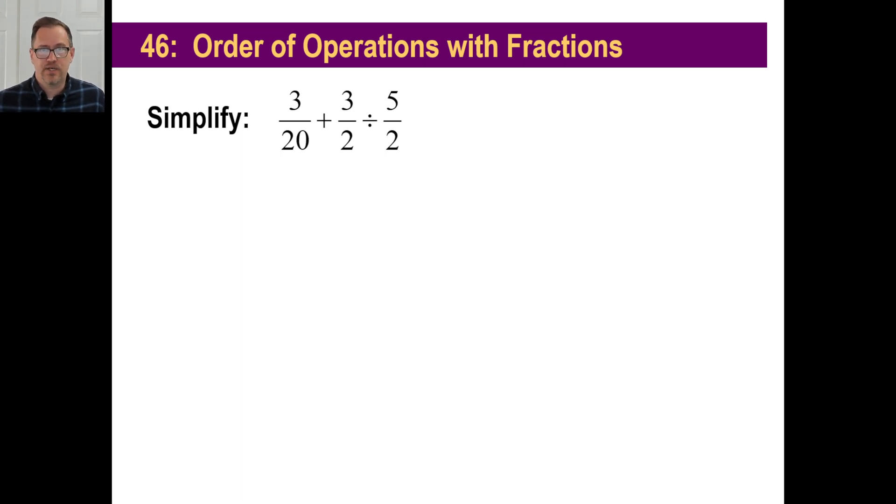Order of operations don't change. You still do parentheses and symbols of inclusion like brackets first. Then you do exponents and square roots. Then you multiply and divide left to right. Then you add and subtract left to right. Then you collapse with exhaustion.